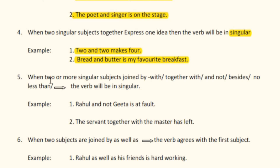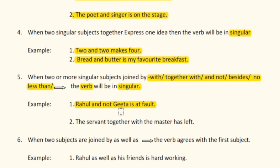Rule number five: when two or more singular subjects are joined by 'with', 'together with', 'and not', 'besides', or 'no less than', the verb will be in singular. For example, 'Rahul and not Geetha is at fault.' Also, 'The servant together with the master has left.' In both sentences, the singular verb is used because of the connecting phrase.